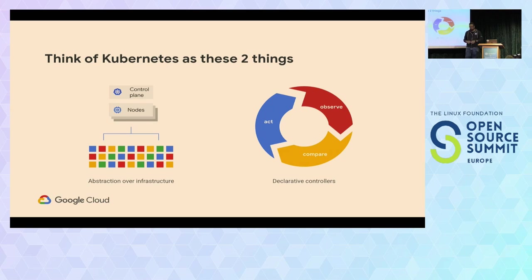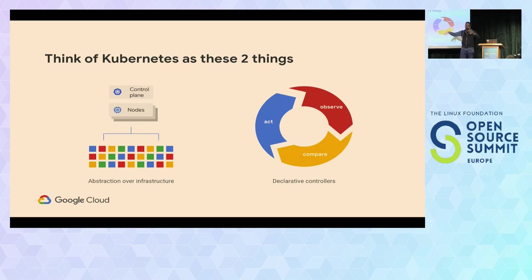A very simple example: you want to deploy a container. In Kubernetes world, we call that a pod. You send your container manifest — the YAML file — to the control plane. The control plane stores that. Then a controller is responsible for making that actual deployment happen. It will monitor what the cluster says should happen versus what's actually happening right now — intent versus reality. It will compare: the cluster is telling me I should have a pod, there is no container right now, so it acts — it deploys the container. This control loop concept applies pretty much everywhere in Kubernetes.